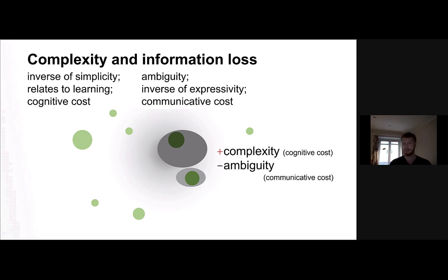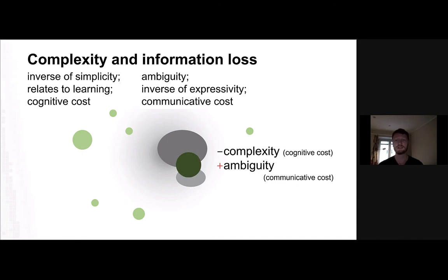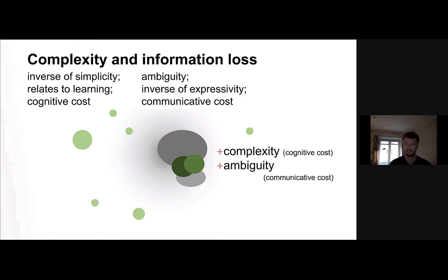So if you have one word for one meaning, you have a bit more complexity because you have to remember two words, but you don't have ambiguity. In the case of colexification, you get a simpler language because you only have to remember one word, but now you're ambiguous. You could also have the situation where two words refer to two meanings and you don't know which is which — that's bad. But what people have shown is that natural languages tend to try to avoid this situation.